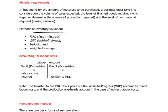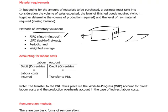Regarding methods of inventory valuation: there is FIFO — first in, first out — where the first items to enter inventory at a particular cost are the first to be removed. LIFO — last in, first out — means the last item going into inventory is the first to come out. Think of LIFO as a box where you put things in from the top; items at the bottom stay there while the last one in sits on top and comes out first.